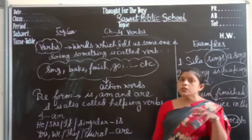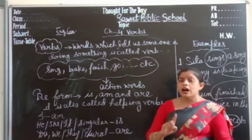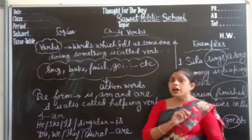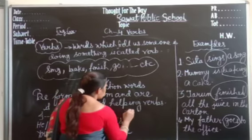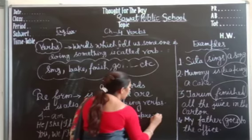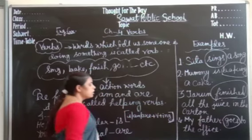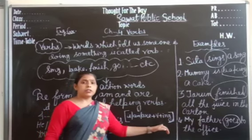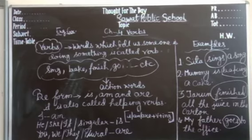One more thing to remember: when you are using is, am, and are with an action verb, then always add -ing with the action verb. Otherwise your sentence will be incorrect. So whenever you use is, am, or are, you must add -ing with the action verb. That is the main rule to remember about B form and how to use it as a helping verb. Once again, you will read all the topics.